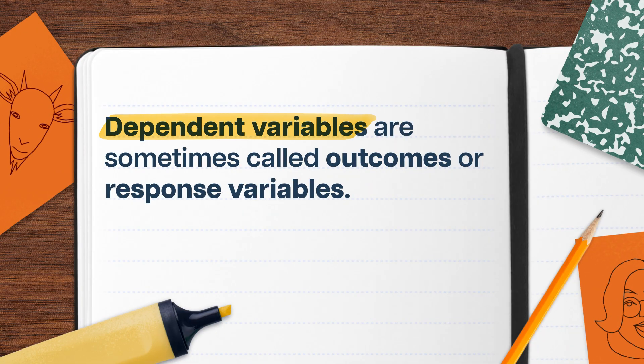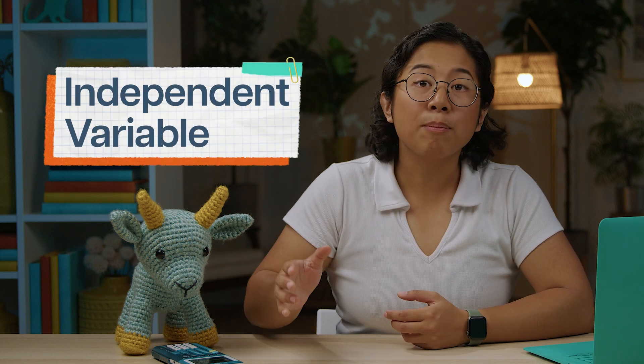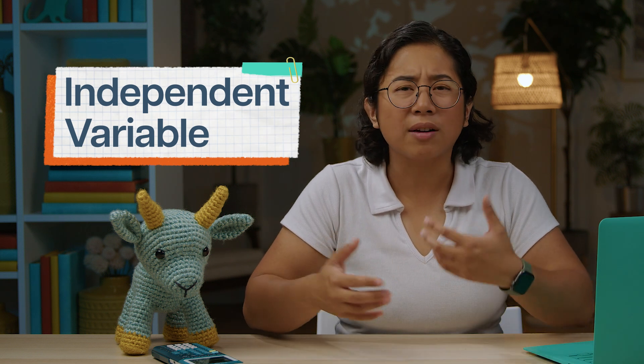Benito's statement argues that the increase in sales results from higher temperatures — in other words, the number of cups he sells depends on the temperature. When we think a variable depends on another variable, we call it the dependent variable. It's the thing we're trying to explain and the reason we're asking the question in the first place. Dependent variables change as an outcome of, or response to, changes in other variables — which is why they're sometimes called outcome or response variables. Benito's high or low sales result from changes in temperature; that's the heart of dependence.